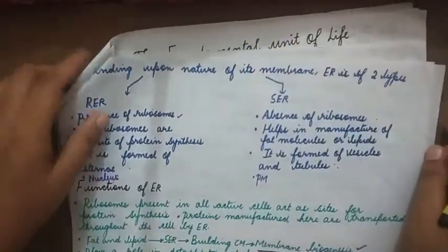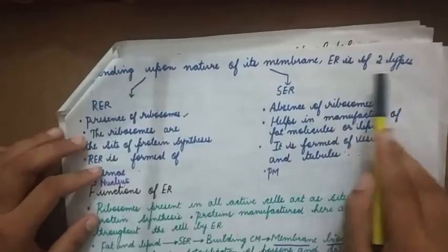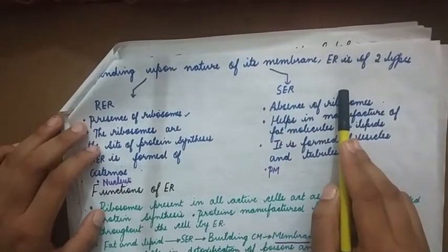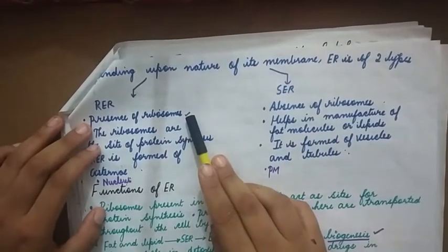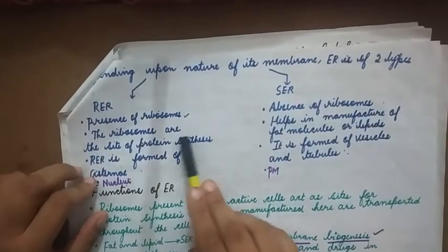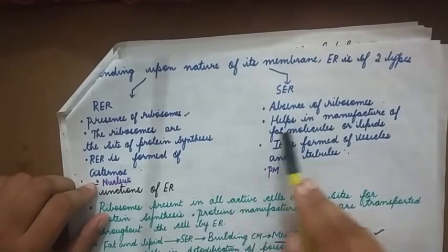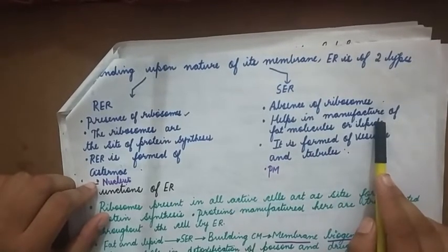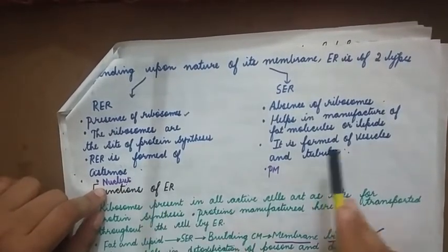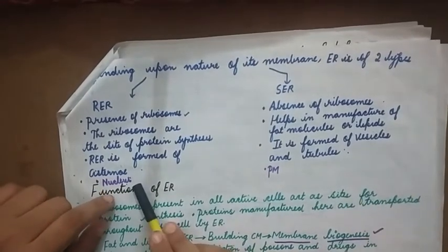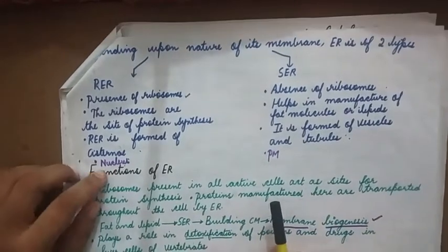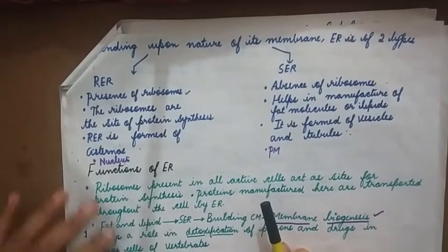Depending upon the nature of its membrane, ER is of two types: RER, that is rough endoplasmic reticulum, and smooth endoplasmic reticulum. Rough endoplasmic reticulum has the presence of ribosomes, whereas ribosomes are absent in smooth ER. Ribosomes are the site of protein synthesis, while smooth endoplasmic reticulum helps in the manufacture of fat molecules or lipids. RER is formed of cisternae and is found closer to the nucleus, while SER is formed of vesicles and tubules and is found near the plasma membrane. The difference between RER and SER is very important.